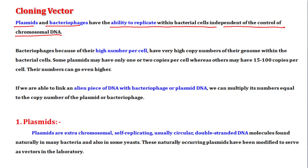Bacteriophages can also replicate. Some plasmids exist in only 1 or 2 copies per cell, while others can replicate in 15 to 100 copies, and even up to 500 copies.